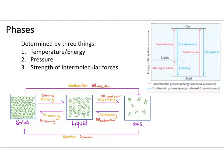The phase a specific substance is in is determined by three main things: the temperature and energy put into or removed from the system, the pressure being exerted onto the system, and the strength of the intermolecular forces. Solids, liquids, and gases all have unique spacing features as well as relative energetics associated with each.